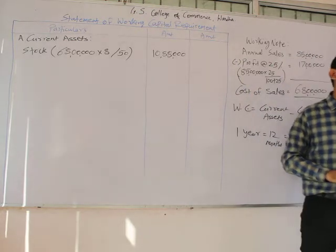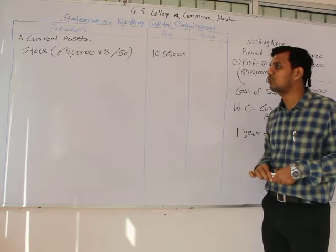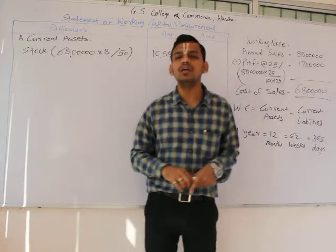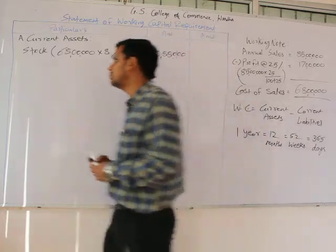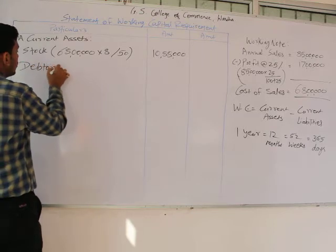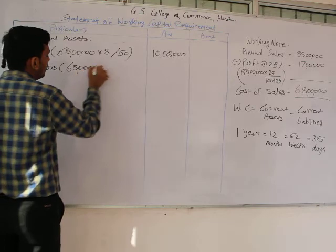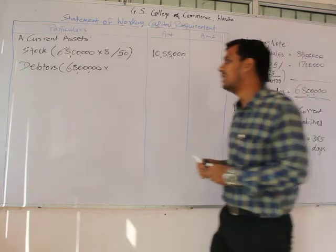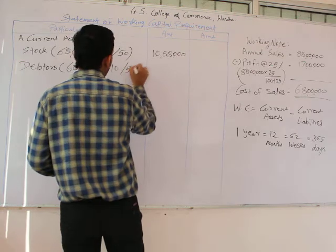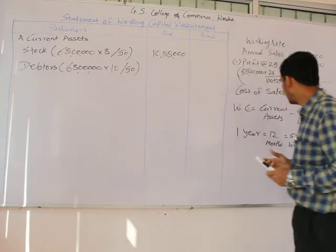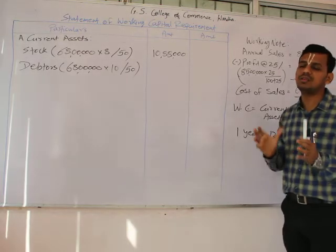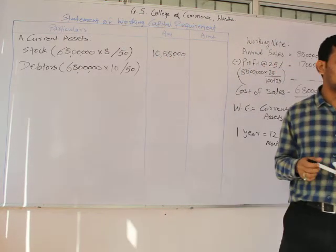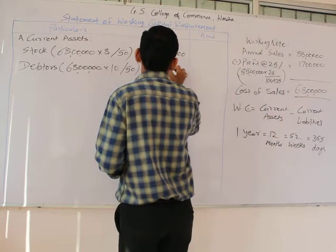The information provided in the question will be taken for the calculation. Here, the average stock in hand is for 8 weeks, so we have taken 8 weeks. Next is debtors. The calculation will again be made on 68 lakhs. The average duration of collection from debtors is 10 weeks. So 68 lakhs × 10 ÷ 50 gives us 13,60,000.